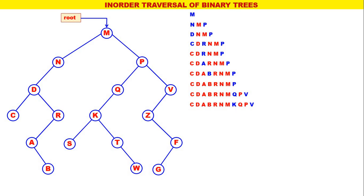Next, the leftmost is K. The inorder for K is S, K, T with K processed, so K is replaced by SKT. Now S — the inorder for S is S only with S processed.